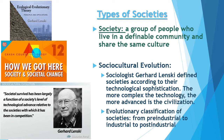The more complex the technology, the more advanced the civilization is to Lenski. This is what we call an evolutionary classification of societies, because as your technology evolves, Lenski views the society overall as more greatly evolved. The other side of that coin is that societies that didn't have highly developed technology are viewed as unevolved, which some critics have a problem with — we'll come back to that in Chapter 10. For now, let's go forward with Lenski's evolutionary classification.